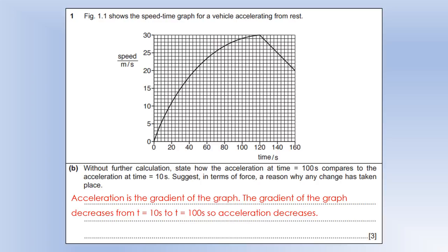So using F equals ma that means resultant force is decreasing. And then why might the resultant force have decreased? Well, it's probably because as an object goes faster, air resistance increases, so that's why the resultant force would decrease.